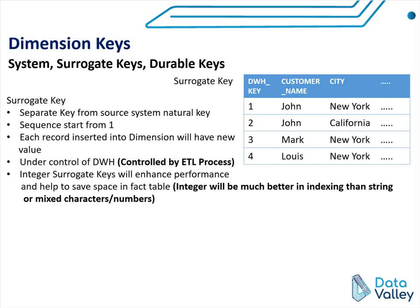So, the surrogate key is the recommended solution to use as a primary key for our dimension tables. As we can see, it resolves all the problems we discussed before with system or natural keys.